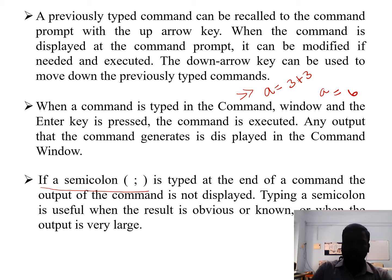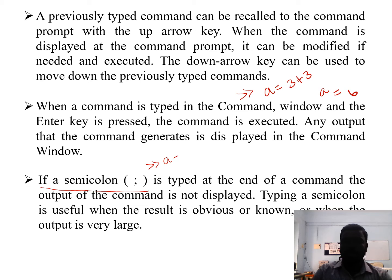Using the semicolon: if a semicolon is typed at the end of a command, the output of that command is not displayed. This is useful when the result is obvious or known, or when the output is very large. For example, if you type a = 5; and press Enter, the value of a is accepted and evaluated but not displayed in the Command Window.